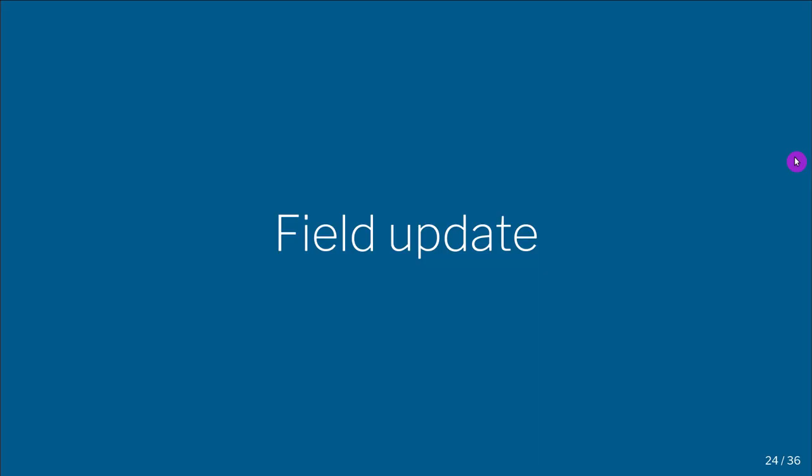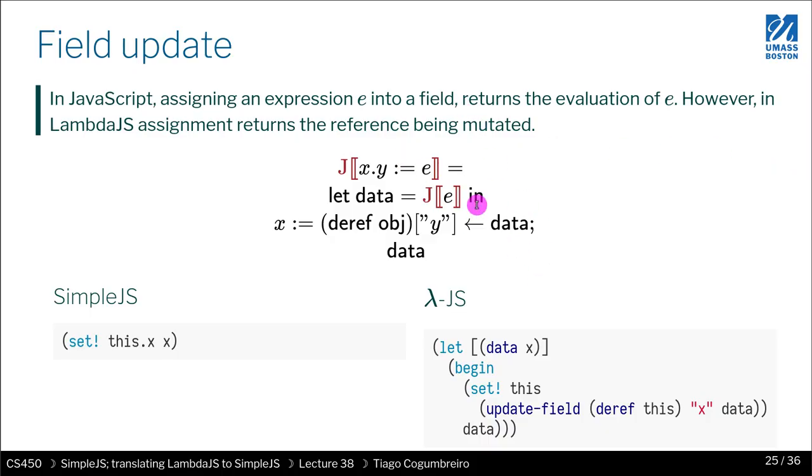The next thing we are going to look at is field update. So field update, we have to do quite a few things. There are certain subtleties that need to be explained and addressed. So in the simple.js, we have this code, and we're basically assigning X to this.x. The code to generate is whenever we're assigning an expression to a field, what do we have to do? First thing we need to do is we need to evaluate the expression, and we evaluate it with a let.